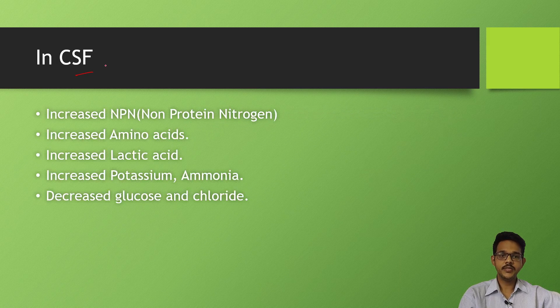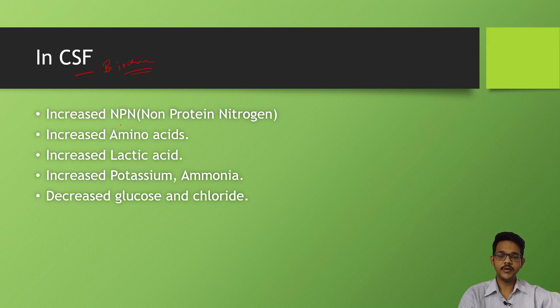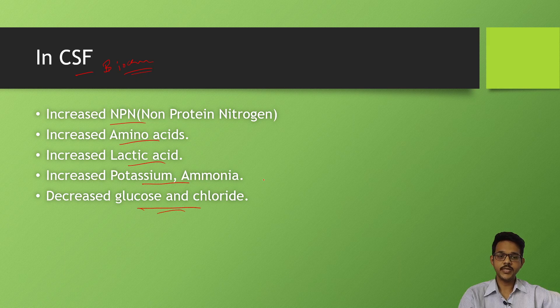Biochemical changes are seen in the body fluids like CSF, blood, and other body fluids. In CSF, there is increase in non-protein nitrogen, increase in amino acids, lactic acid, potassium, and ammonia, and there is decrease in glucose and chlorides at a steady rate.